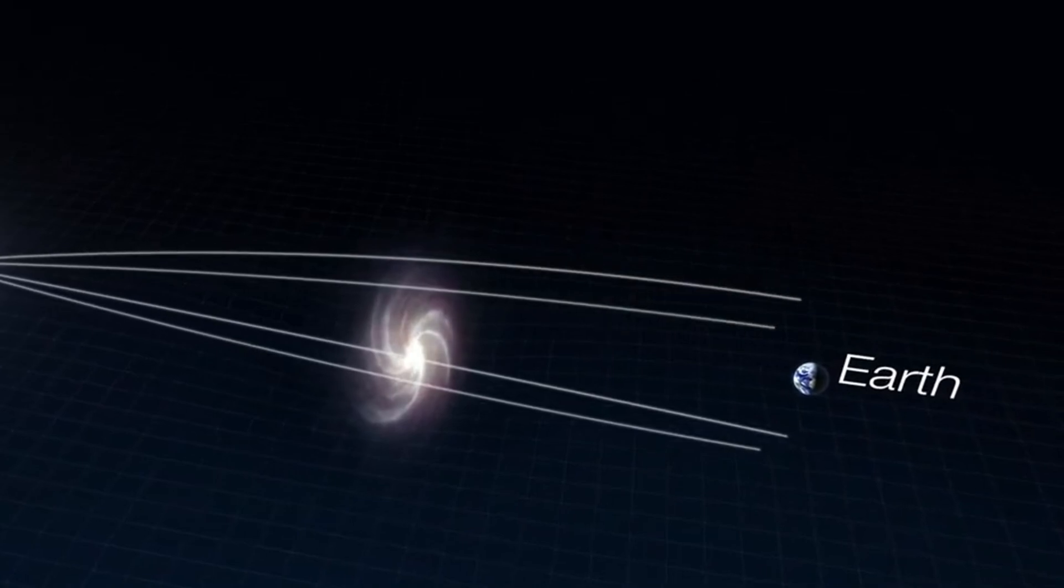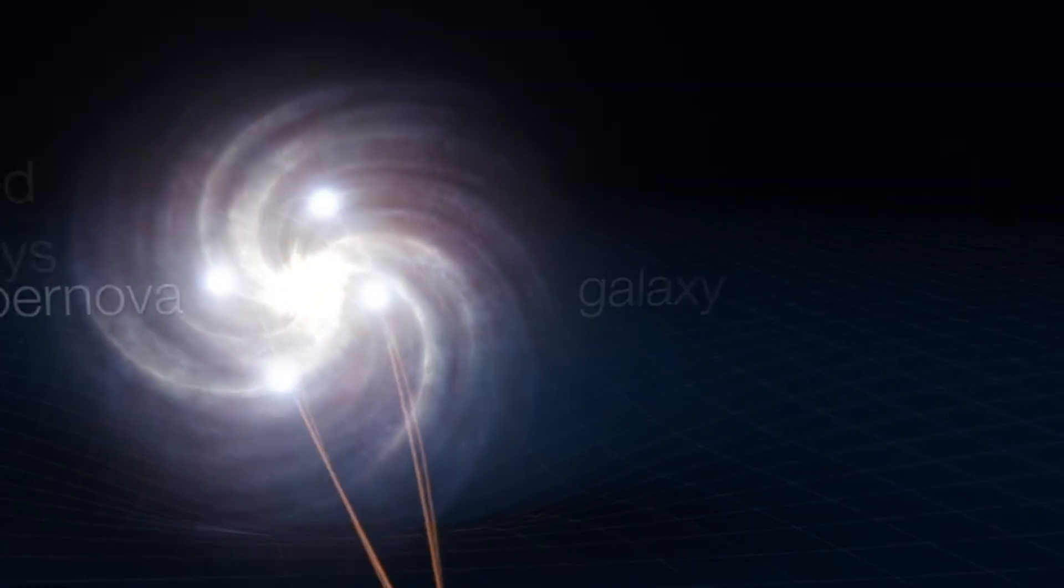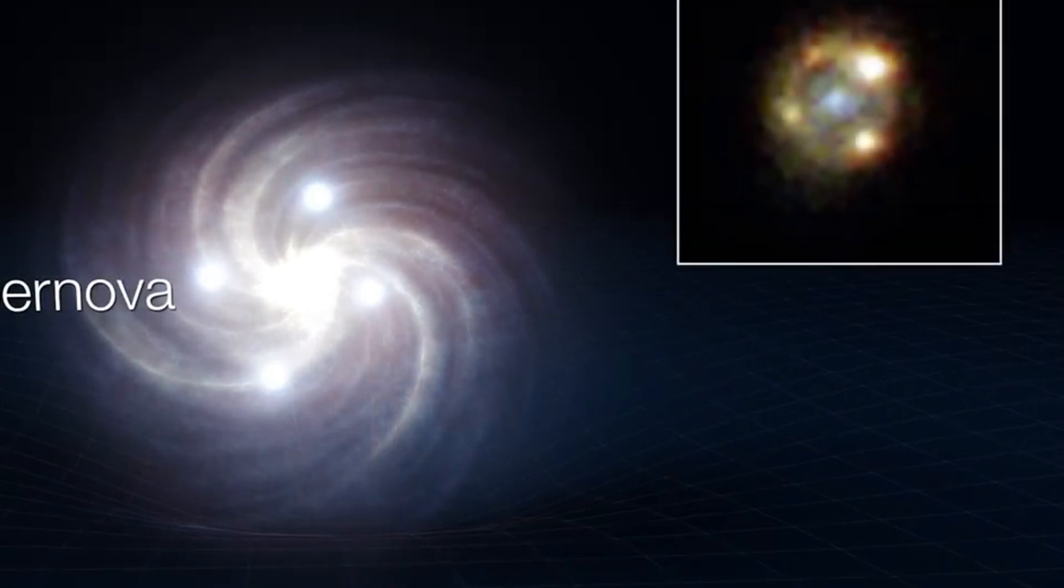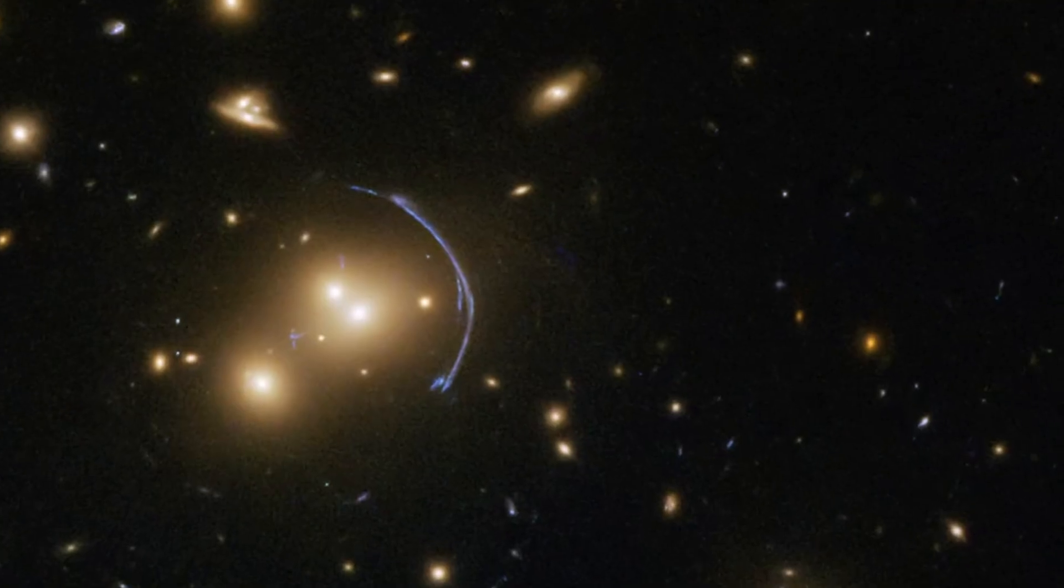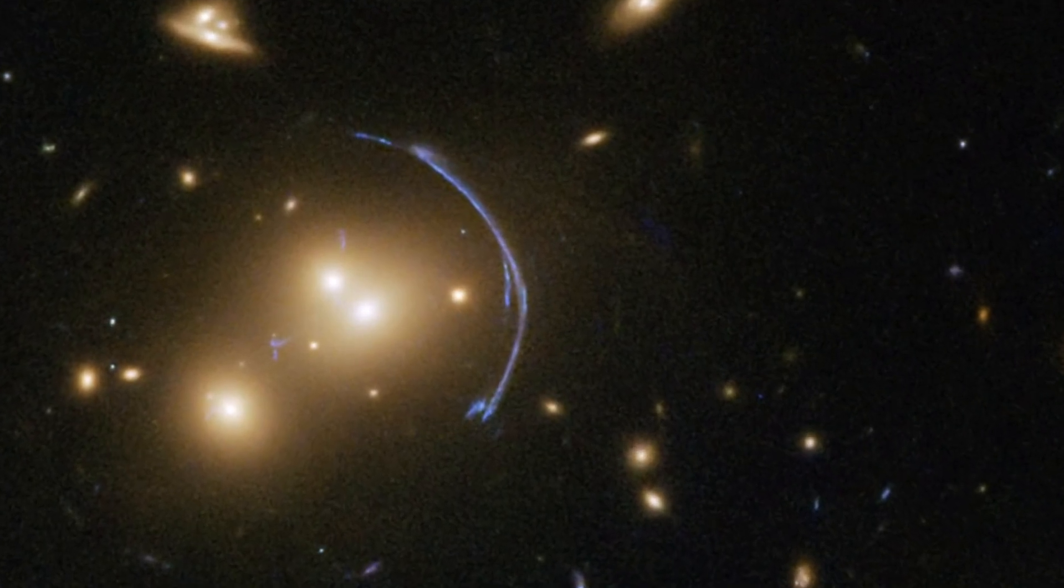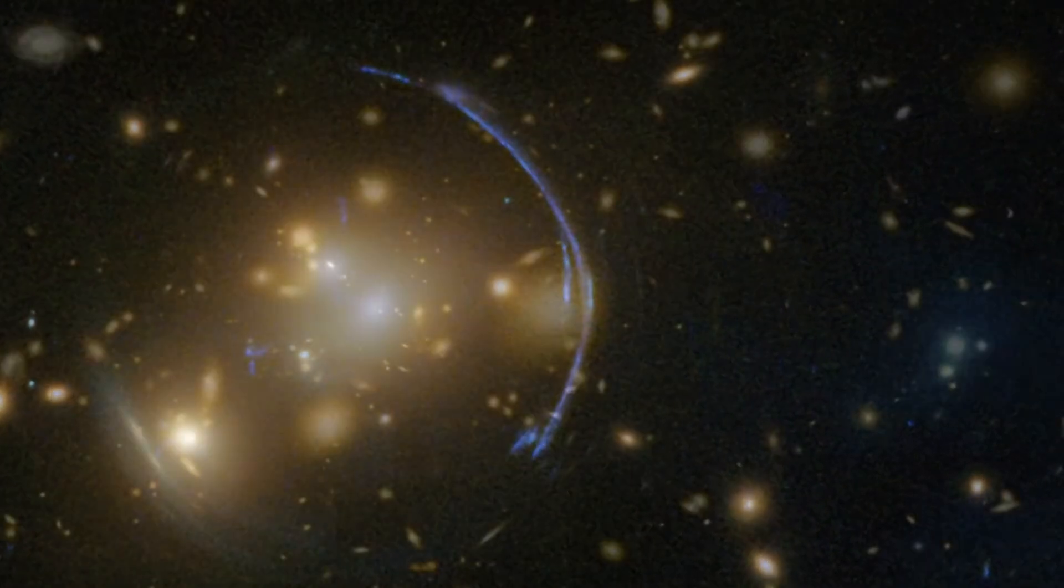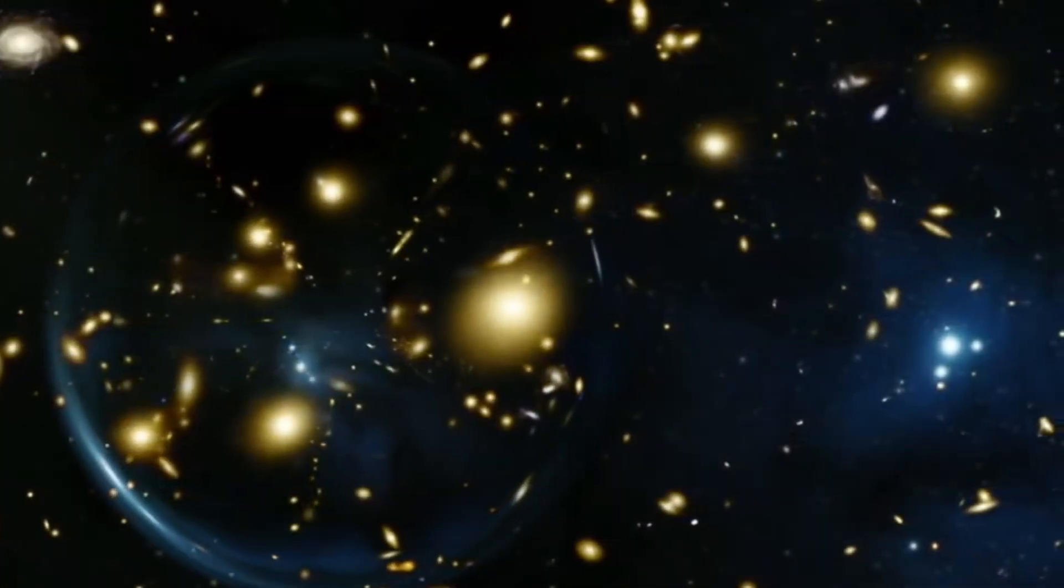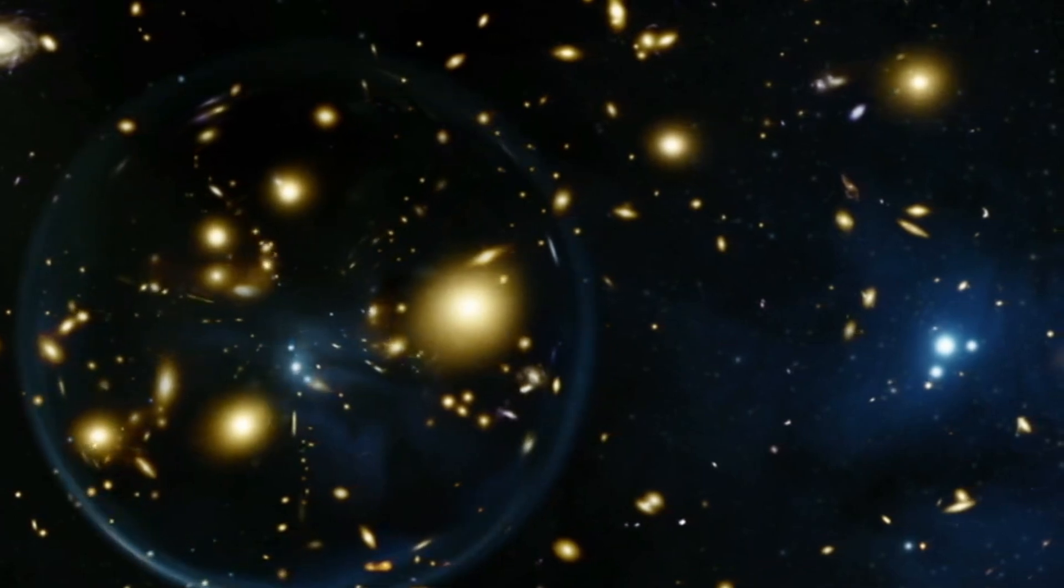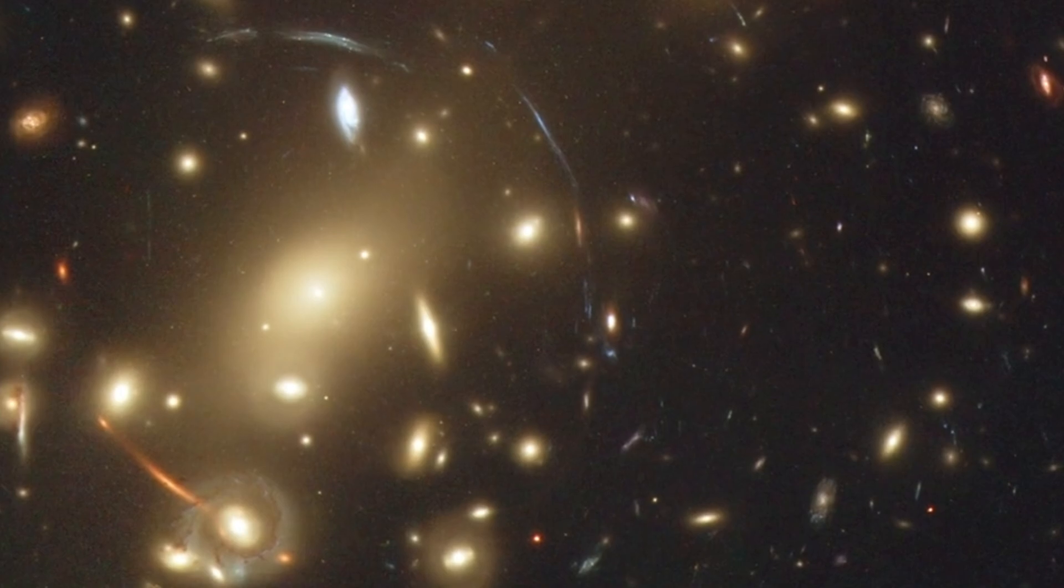Additionally, the James Webb Space Telescope has taken a fresh picture of Earendel, the farthest star yet discovered. The JWST was used by scientists to monitor this star in more detail. This star emitted the light we now see some 12.9 billion years ago, so it exists in a realm of space just 900 million years after the Big Bang.